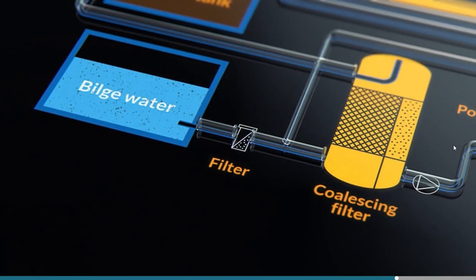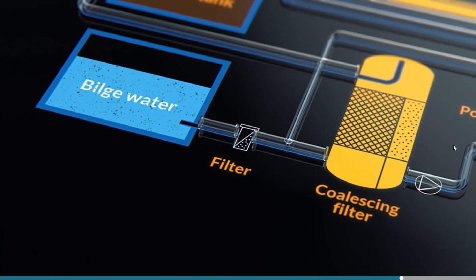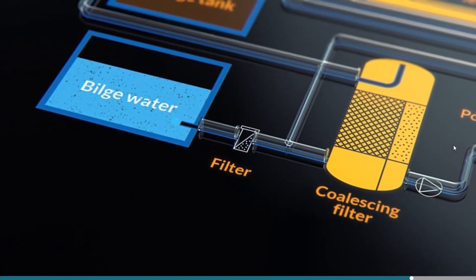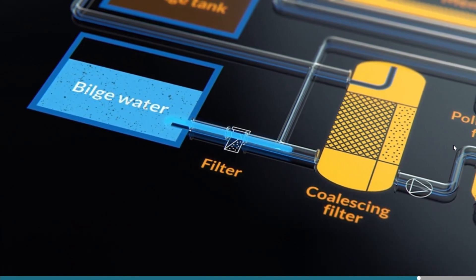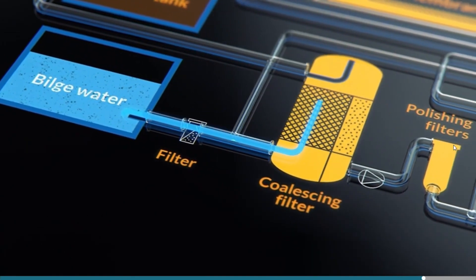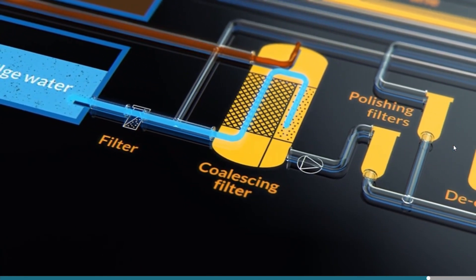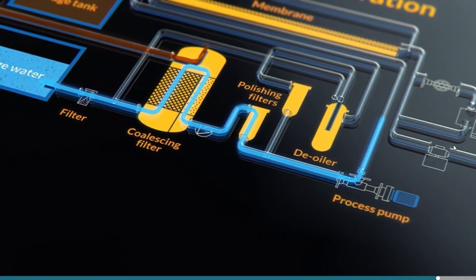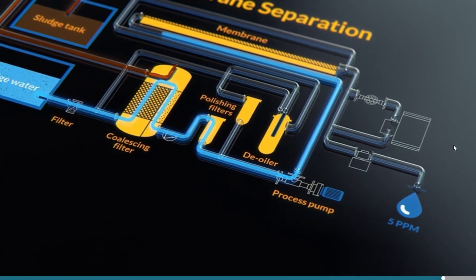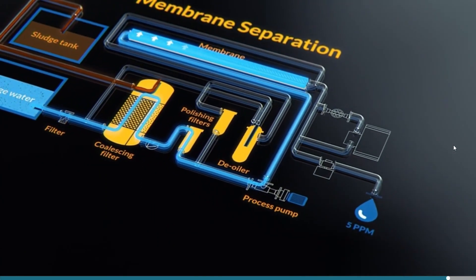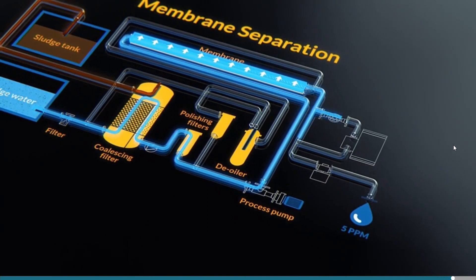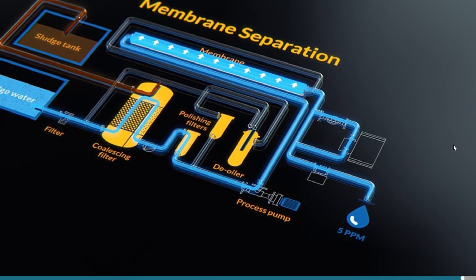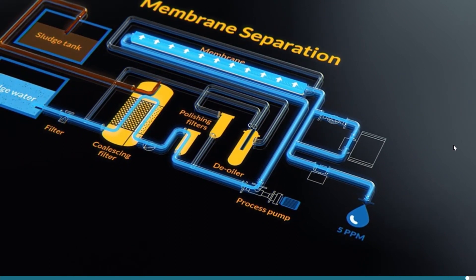The separation process in a membrane-type bilge separator takes the following steps. Step 1: In the first stage, the bilge water passes through a coalescing filter, where small oil droplets stick to the coalescing mesh. Step 2: Filtration through polishing filters, including membranes that do not allow the passage of oil droplets. Clean water then passes through the oil monitoring equipment and goes overboard.